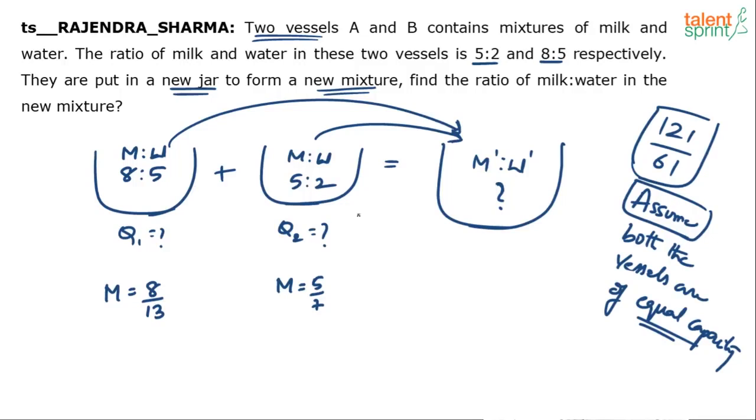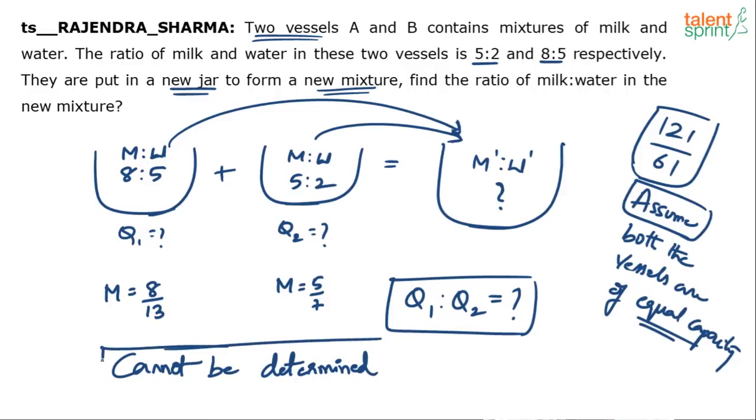Q1:Q2 is not given. Either he should say both of them are equal, 1:1, or he should give the original ratio for us to be able to solve the question. So anybody who has got 121:61 as answer to this question is wrong. The answer is cannot be determined—incomplete question or answer cannot be determined because the ratio of quantities has not been specified.